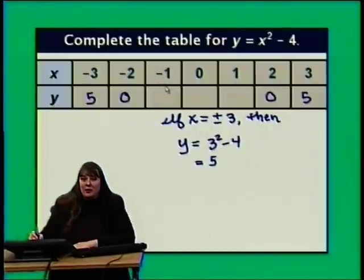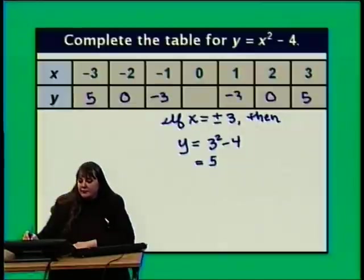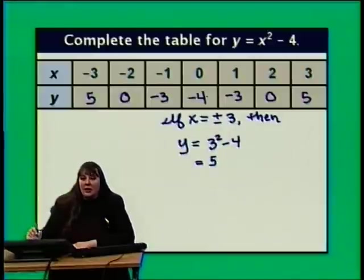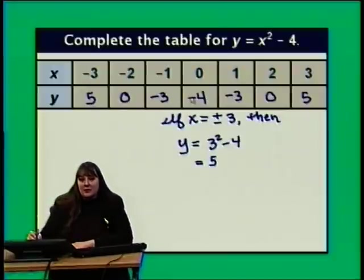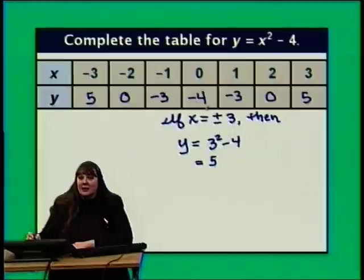What if x is negative 1 or positive 1? When we square either of these numbers we get positive 1, and 1 minus 4 is negative 3. So whether x is negative 1 or positive 1, y is negative 3. Finally, if x is 0, then 0 squared minus 4 is negative 4. The y values start at 5, decrease to negative 4, and increase back to positive 5. Even though x values increase by 1 each time, y values change at different rates: decreasing by 5, 3, 1, then increasing by 1, 3, and finally 5.